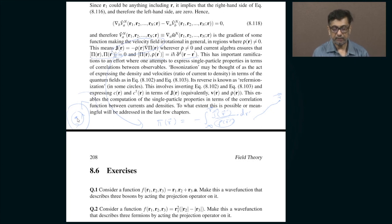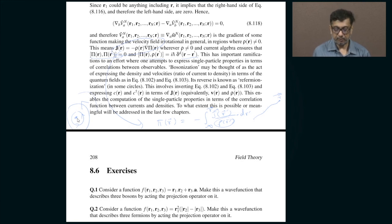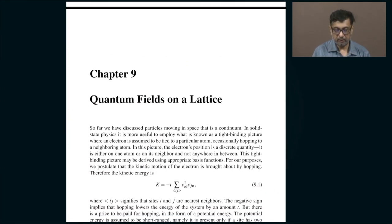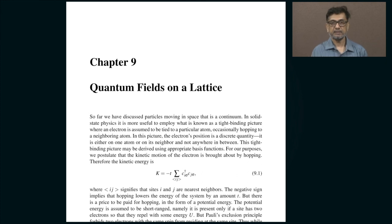Later on I am going to use this idea of current algebra in a very deep and technical way — that is called Bosonization, which I will explain when I use it. In the next class I am going to discuss something very important to condensed matter physicists: quantum fields on a lattice. I will stop now — thanks for listening, and I hope to see you in the next class.